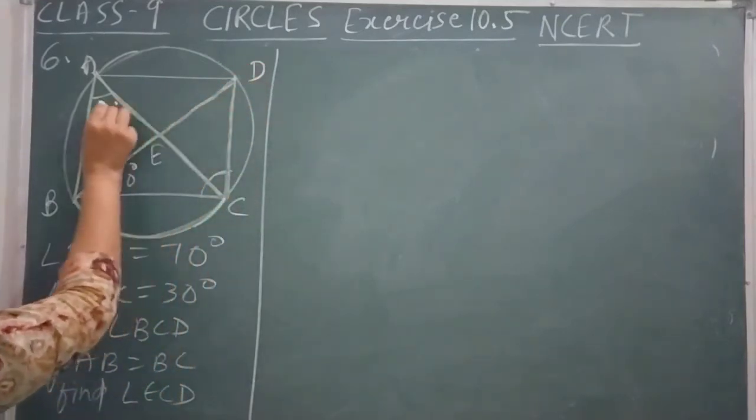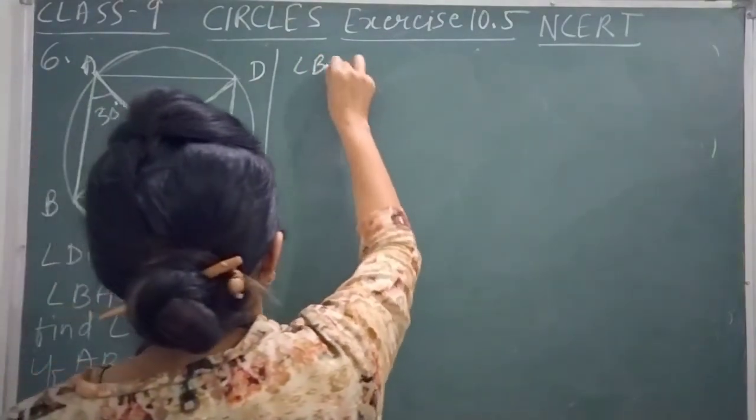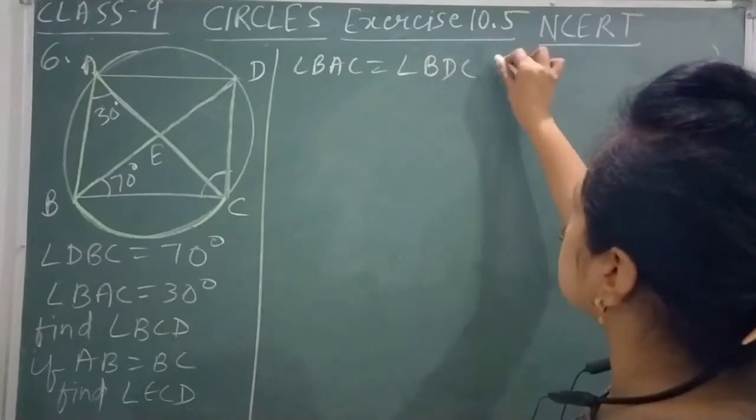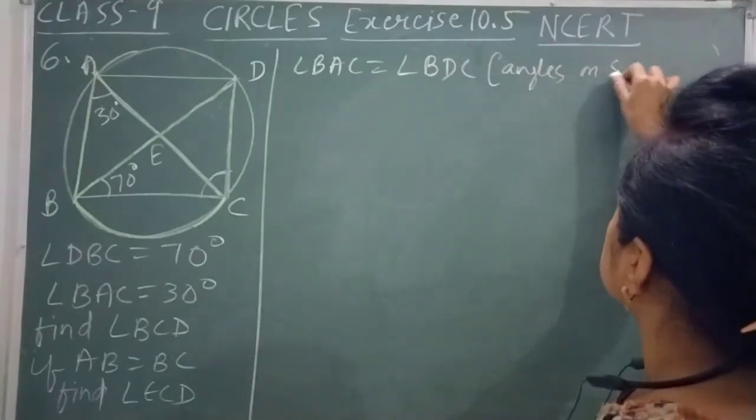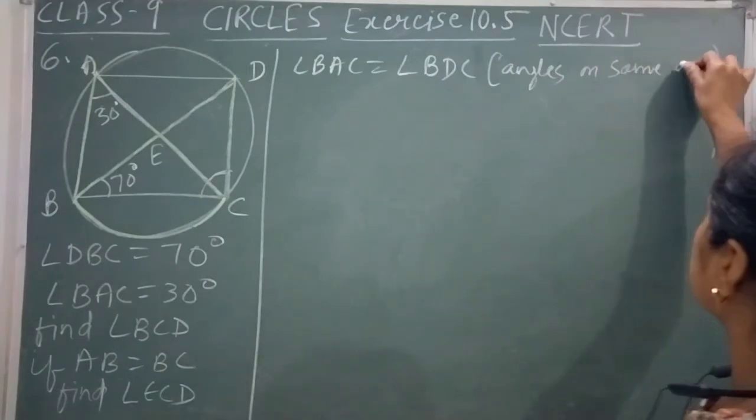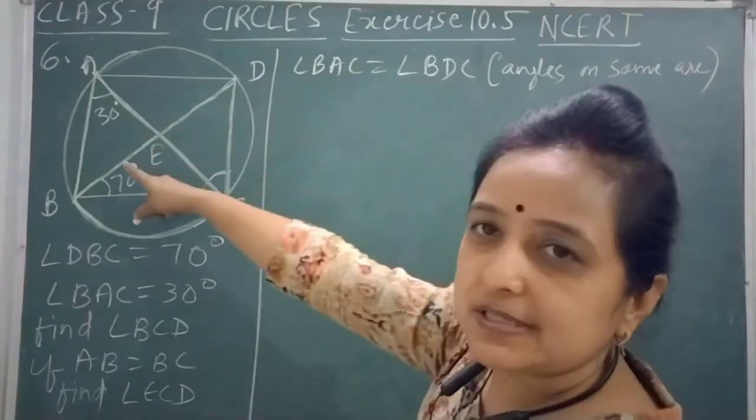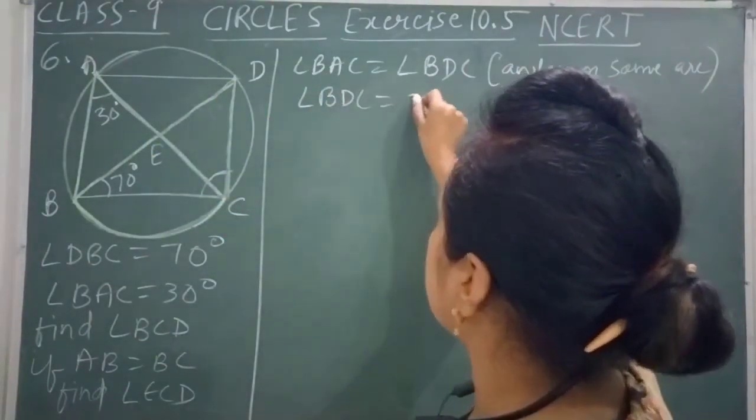So these two angles are equal. Angle BAC is equal to angle BDC, made by the same arc. Angle BAC is 30 degrees given to us, so angle BDC is also 30 degrees.